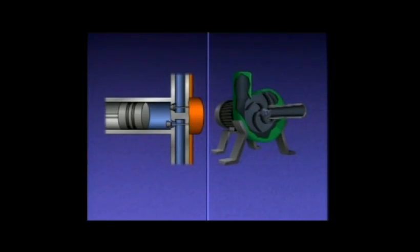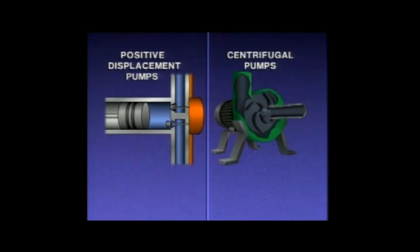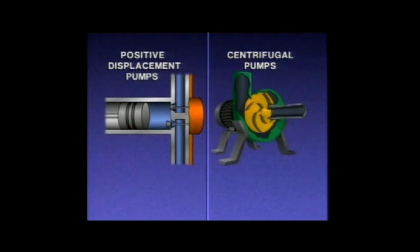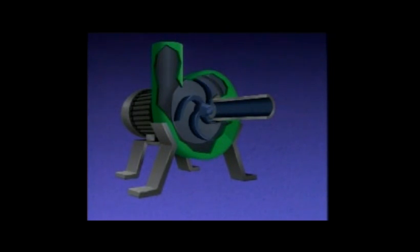Basically, pumps can be grouped into two general categories: positive displacement pumps and centrifugal pumps. A positive displacement pump uses a piston or some other device to push, or positively displace, controlled amounts of liquid through the pump. A centrifugal pump, on the other hand, uses an impeller which creates a centrifugal force to move the liquid — a force that develops when something moves or spins in a circular motion, pushing the liquid away from the center of rotation and out of the pump.